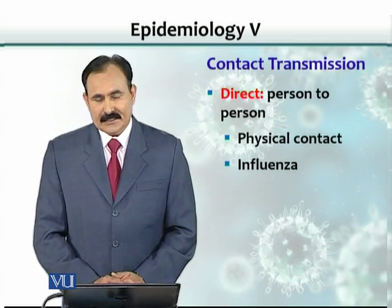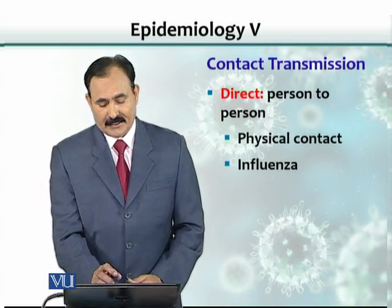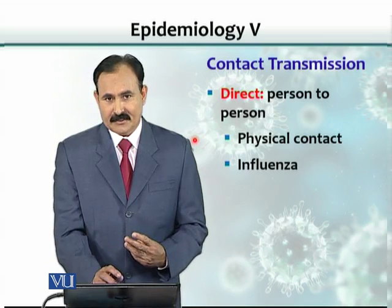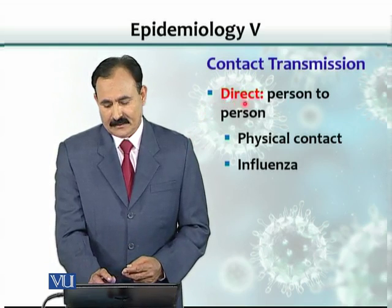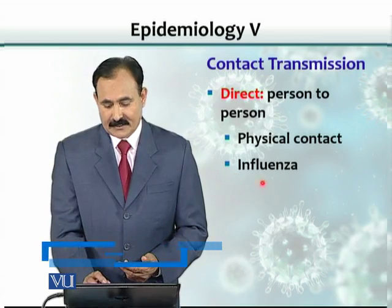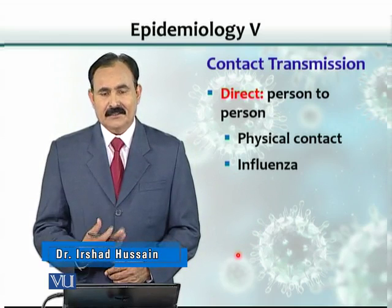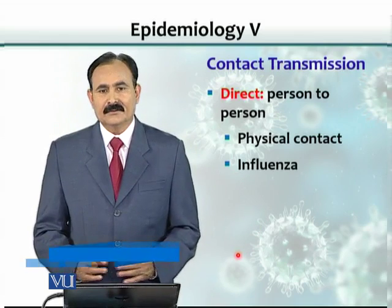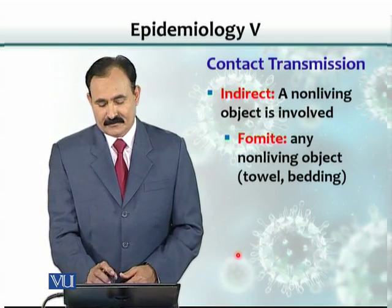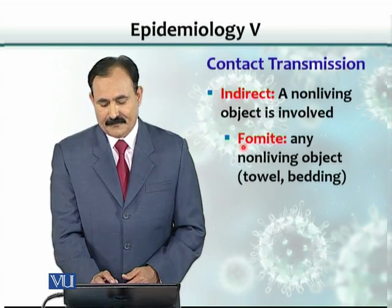Diseases could be transmitted by contact, and there are three ways contact can occur. The first is direct contact, like person to person, which is a physical contact. A very good example is influenza — when somebody is suffering from flu and sneezes, they spread those viruses to the nearby person. The organism could also be contacted through indirect means, like fomites.